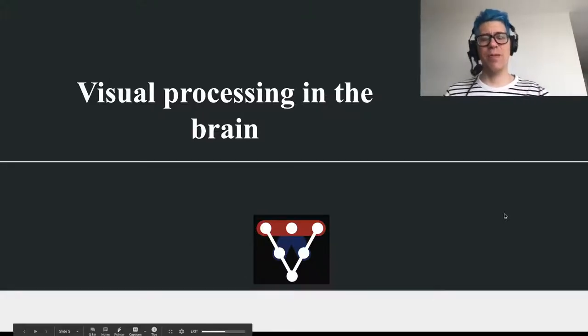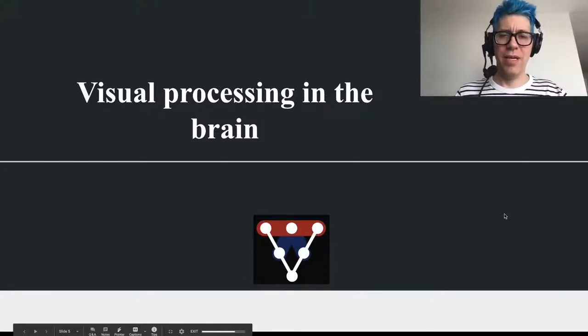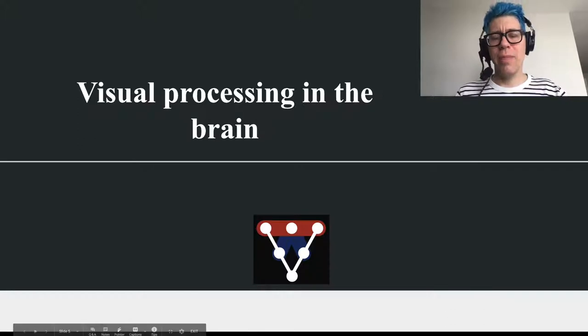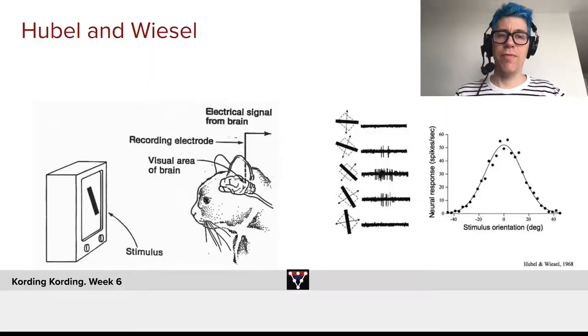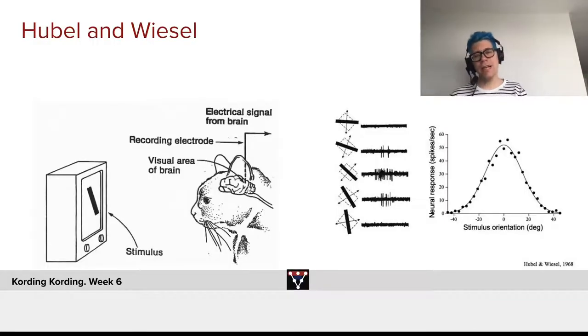Well, let's talk a little about visual processing in the brain. This is very important because a lot of the early approaches on ConvNets have been inspired by insights from the brain. So let's look at historical electrophysiological experiments.